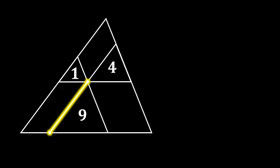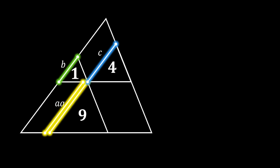So let's first label the side of our bottom inscribed triangle as a, the corresponding side of our left inscribed triangle as b, and the side of our right inscribed triangle as c.